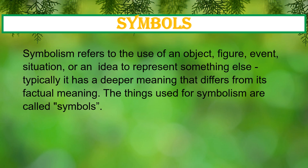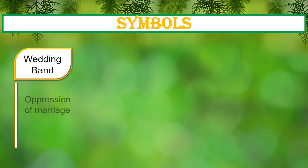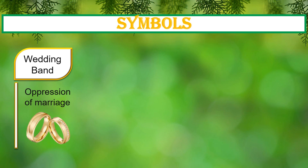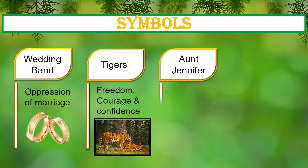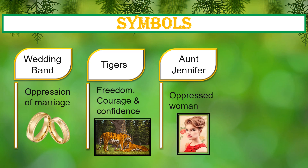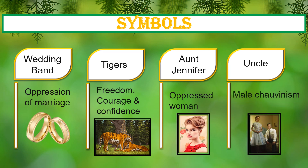Symbolism refers to the use of an object, figure, event, situation or idea to represent something else — typically with a deeper meaning that differs from its factual meaning. The massive weight of uncle's wedding band is a symbol of harsh and bitter experiences of Aunt Jennifer's married life. The tigers are the symbol of courage, honour, bravery and confidence. Aunt Jennifer is a symbol of an oppressed woman, a victim of gender oppression. Uncle is a symbol of male chauvinism, dominating Aunt Jennifer and considering her his property.